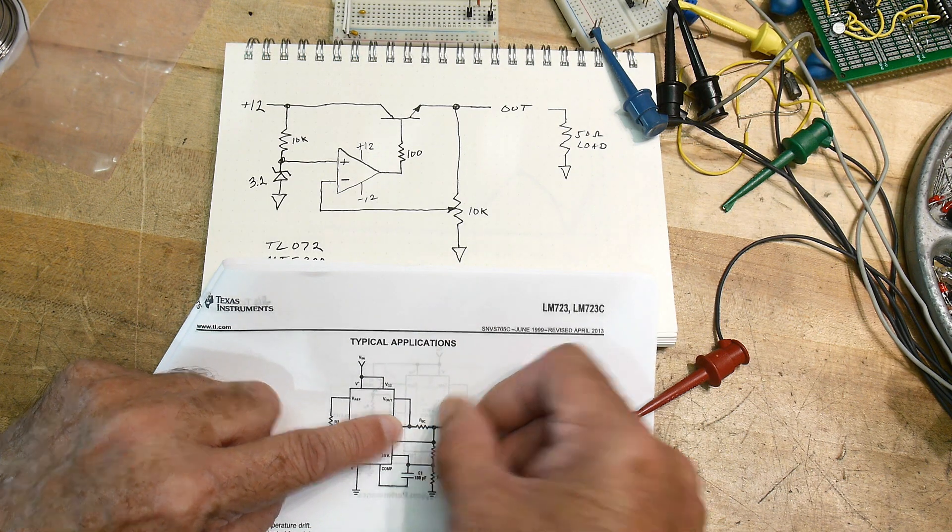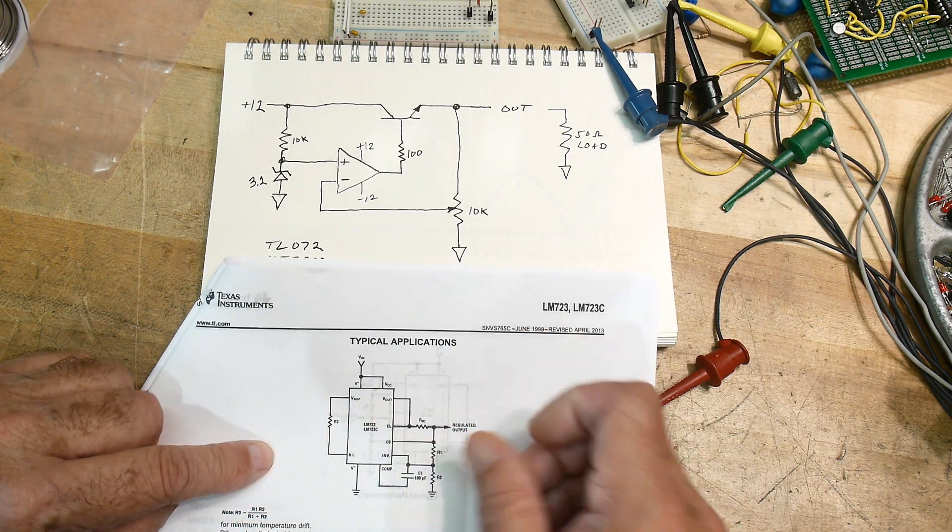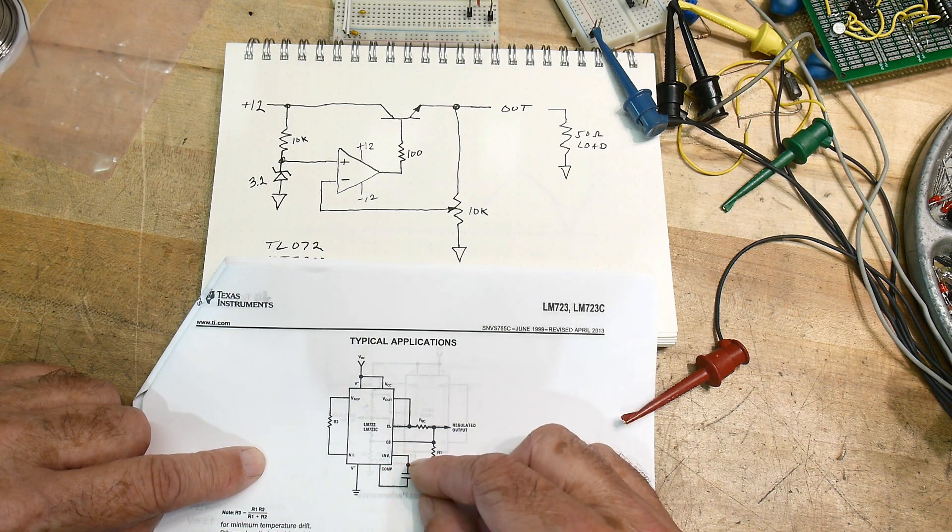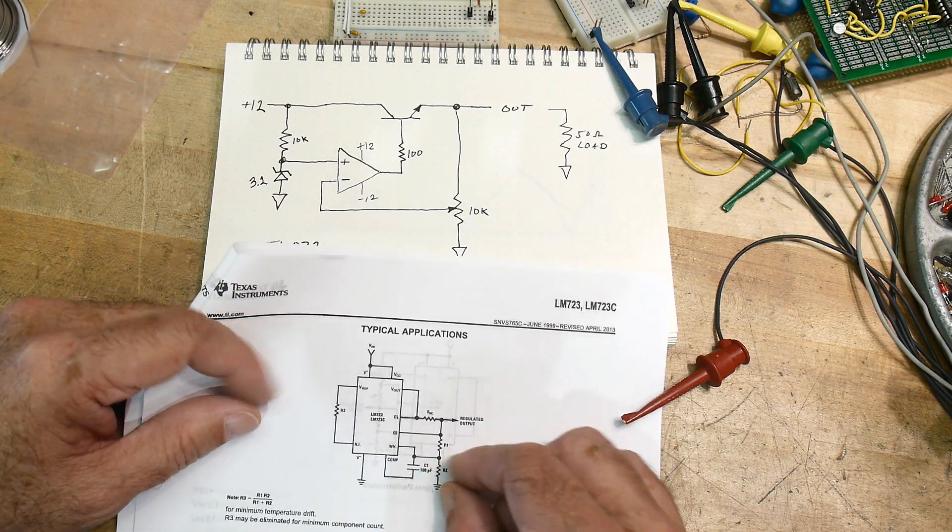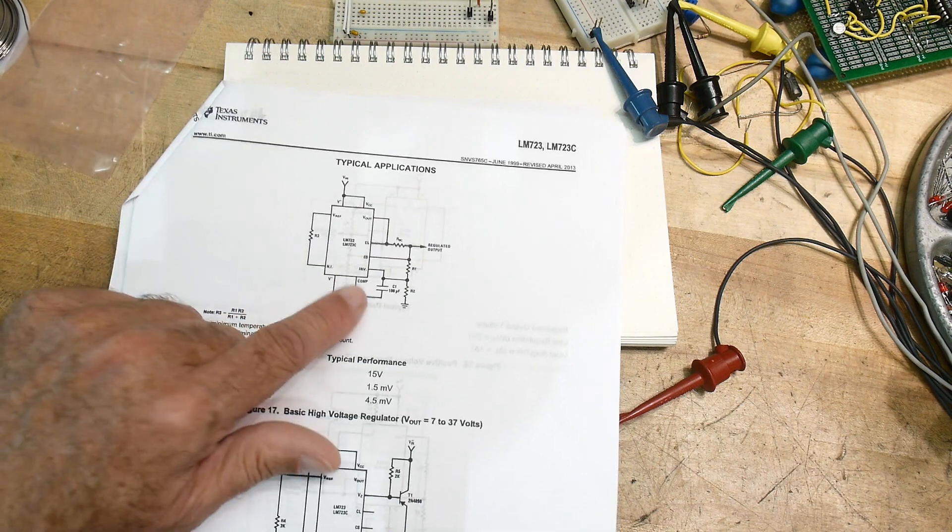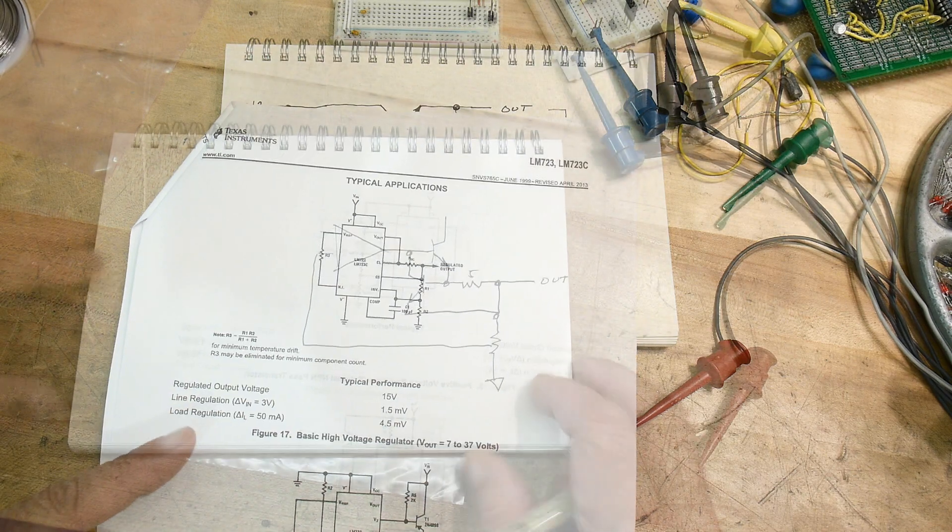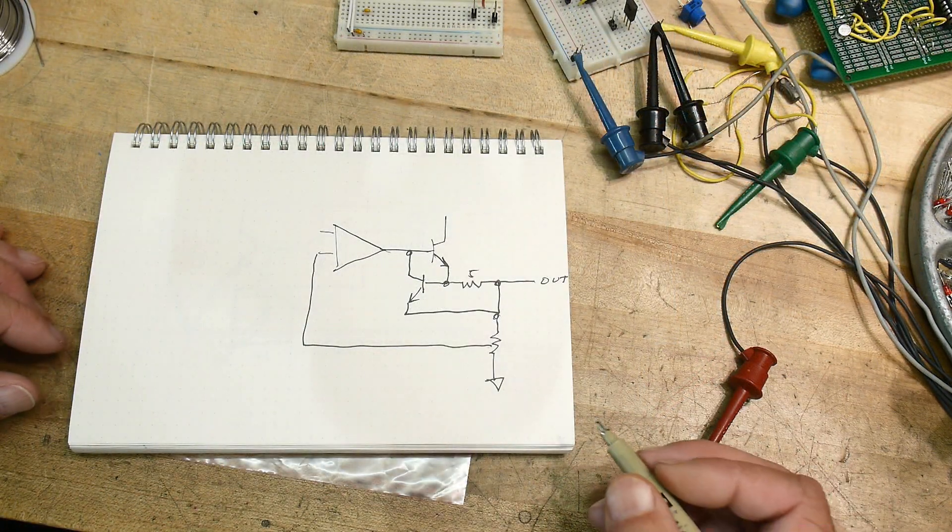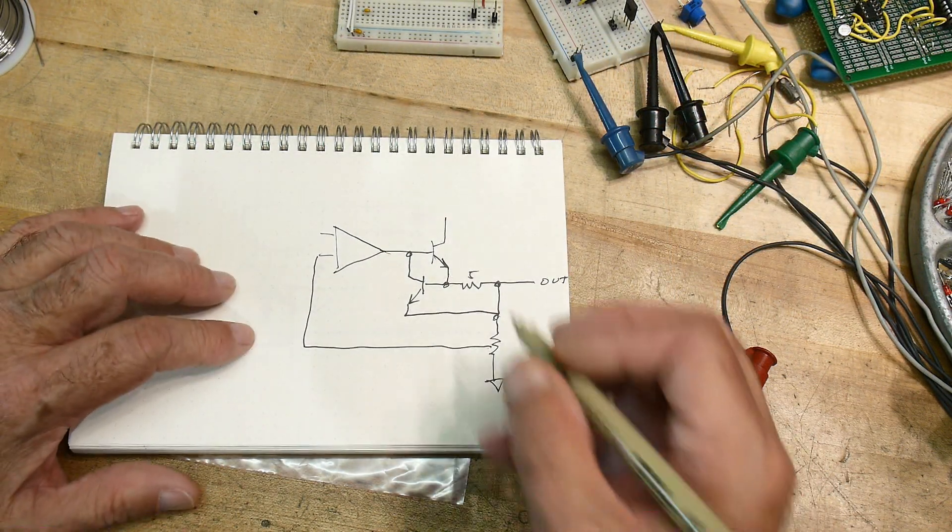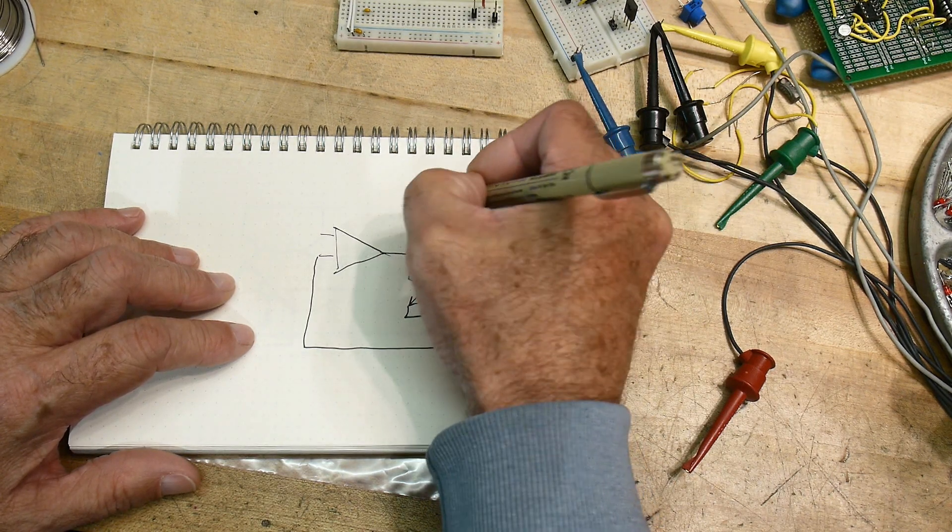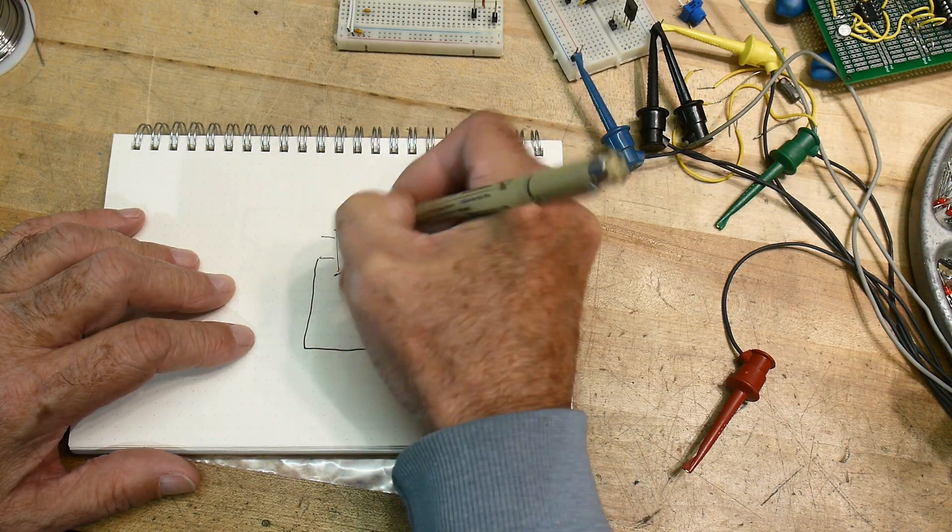So if the voltage drop across this resistor is bigger than half a volt, then that transistor will start to turn on and it will current limit. If you put in a 5 ohm resistor here, it'll limit it to 100 milliamps. You can do the math, it's 0.5 volts divided by 5 ohms. Let me redraw their schematic because I just don't like the way it looks.